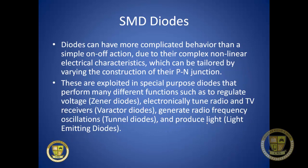Diodes can have more complicated behavior than a simple on-off action due to their complex nonlinear electrical characteristics, which can be tailored by varying the construction of their PN junction. These properties are exploited in special-purpose diodes that perform many functions, such as regulating voltage (zener diodes), electronically tuning radio and TV receivers (varactor diodes), generating radio frequency oscillations (tunnel diodes), and producing light — light emitting diodes, or LEDs.